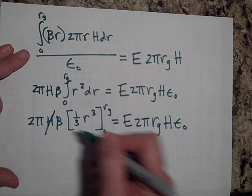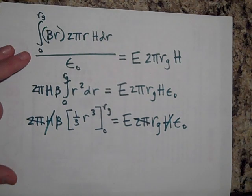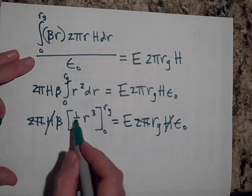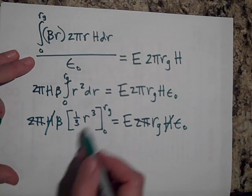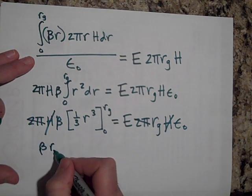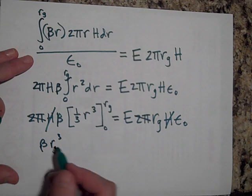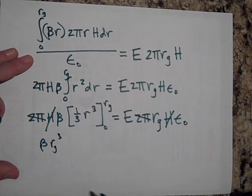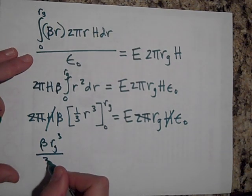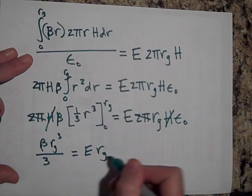Hey, I suppose we can get rid of the H and the 2 and the pi. And let me solve this then. If I put in R_g, I get that's going to last, but when I put in 0, that's going to disappear. So it's just going to be beta R_g cubed. What is R_g? R_g is the radius of the Gaussian cylinder. So beta R_g cubed over 3 is equal to E R_g epsilon naught.